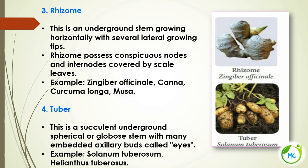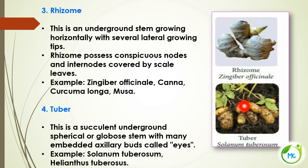Next is tuber. A tuber is a succulent underground, spherical or globose stem with many embedded axillary buds. These axillary buds are referred to as the eye of the potato. When you leave the potato for several days, you can see buds developing from the eyes. Example: Solanum tuberosum — potato.